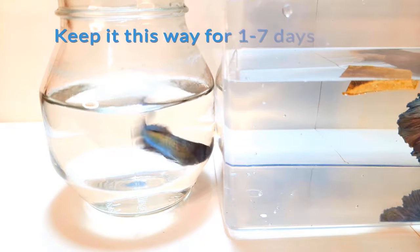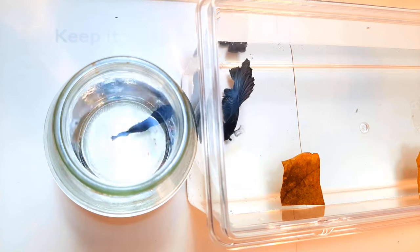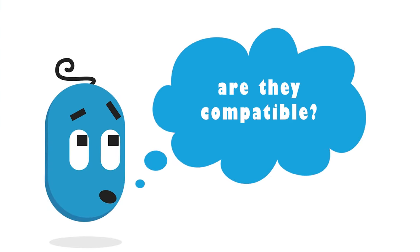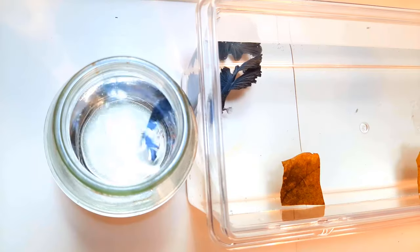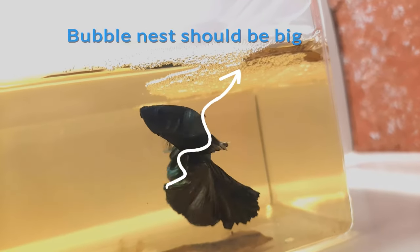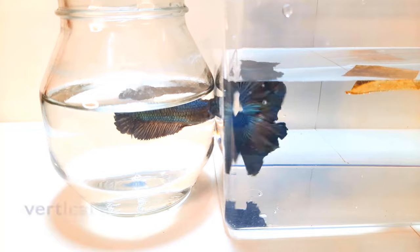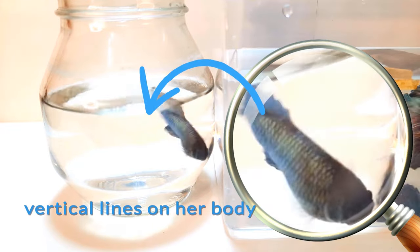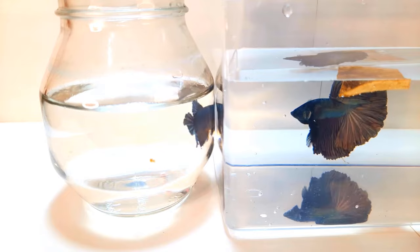This takes from a day to a week until you feel they're comfortable with each other. How will I know that they're comfortable with each other? You'll know when it's time to do the actual breeding when the male's bubble nest is big. For the female, she will display vertical lines on her body. Let's leave them and come back tomorrow.